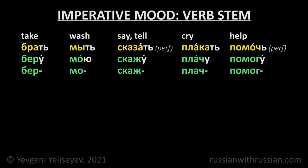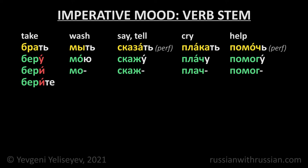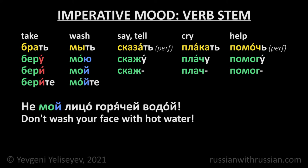Я беру — the stress falls on the ending, so the informal imperative form ends in a stressed И: Бери, Берите. Берите всё, что хотите — Take whatever you want. Я мою — the ending is unstressed and the stem МО ends in a vowel, so the informal imperative form ends in Й: Мой, Мойте. Не мой лицо горячей водой — Don't wash your face with hot water.